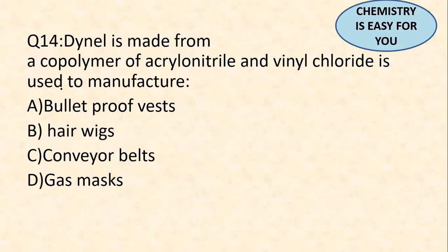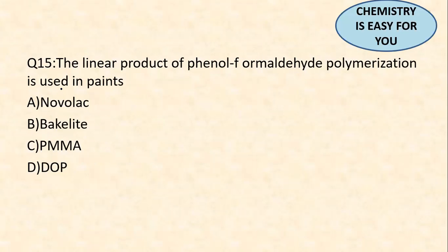Question 14: Dynel is made from a co-polymer of acrylonitrile and vinyl chloride, and it is used to manufacture what? It is used for making hair wigs. Many of us do not know what hair wigs are composed of — it is actually a polymer named Dynel, made from acrylonitrile and vinyl chloride.